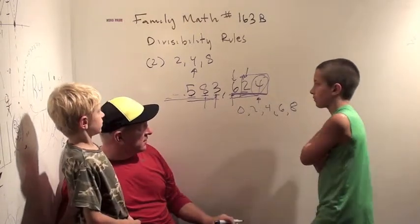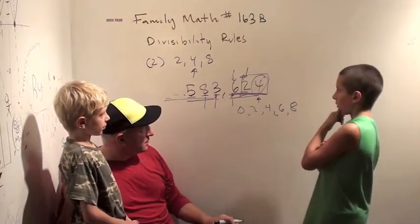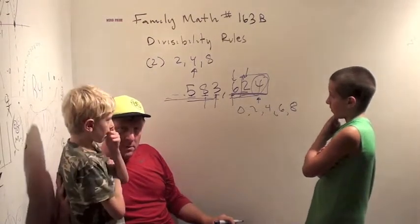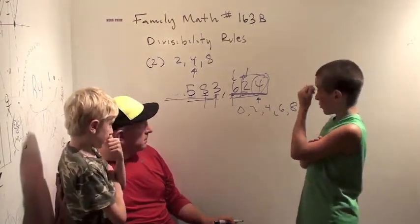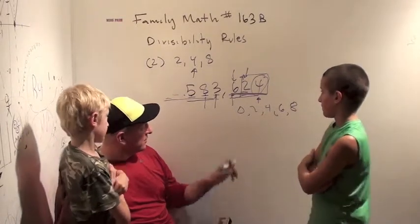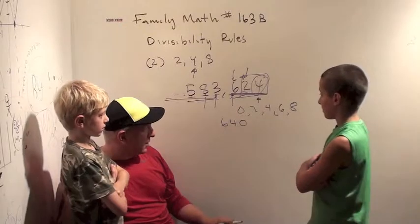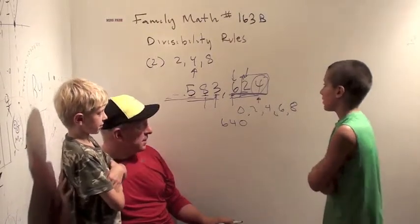So is this number divisible by 8? Well, we don't know much about 624. Well, I know that 640 is. Ah, we know that 640 is divisible by 8. How do you know that? Because 64 is. Okay. And you just multiply by 10.